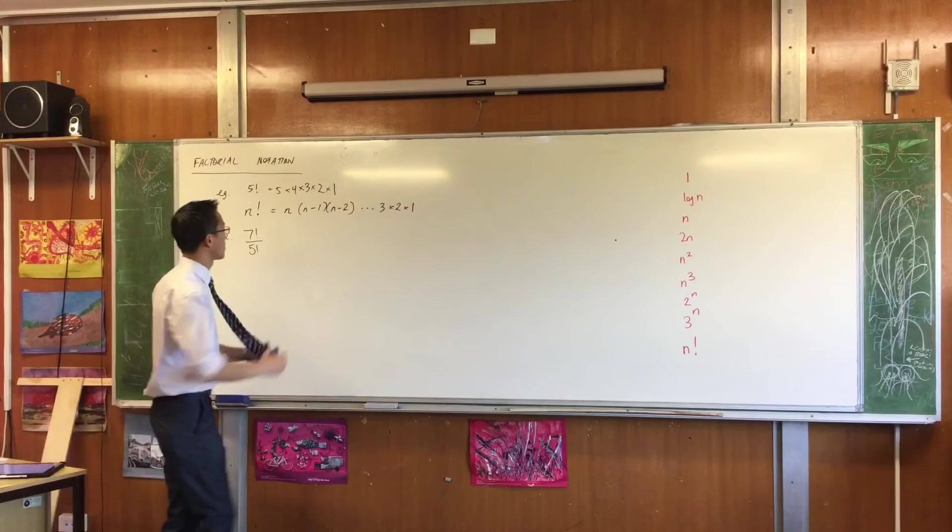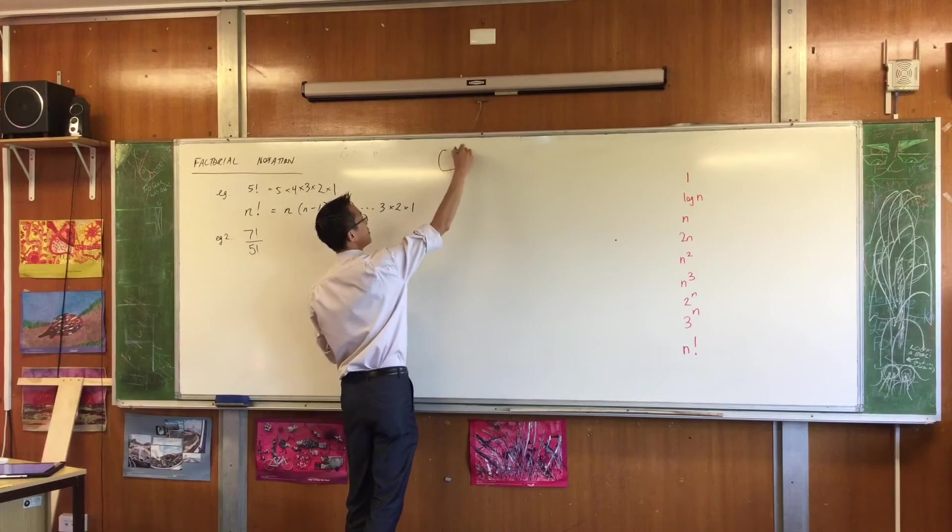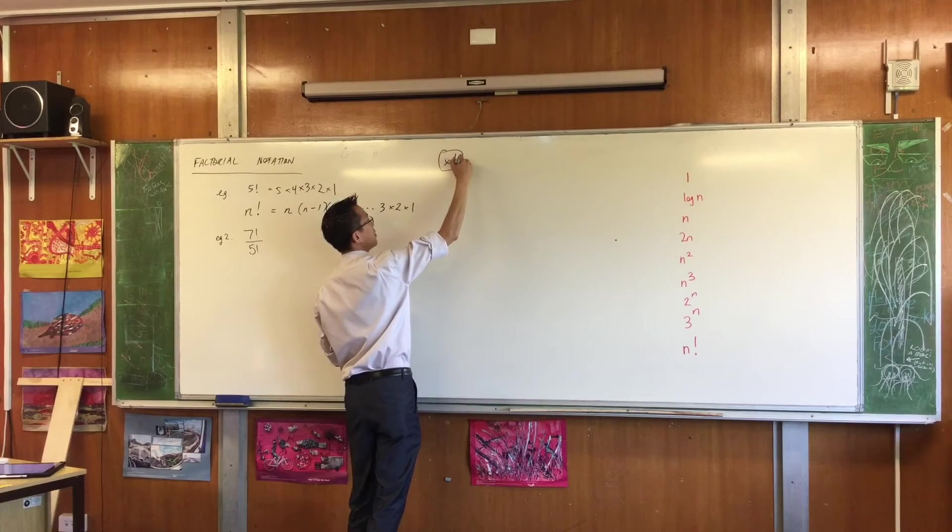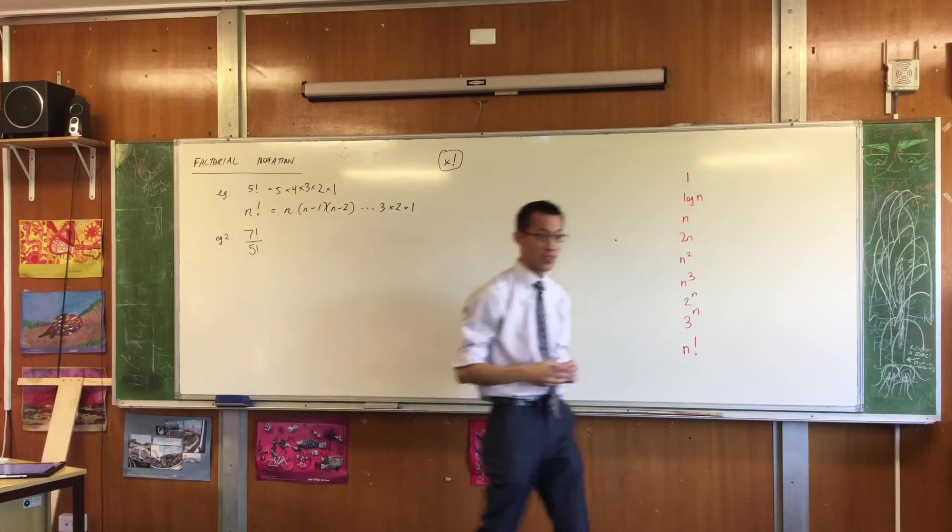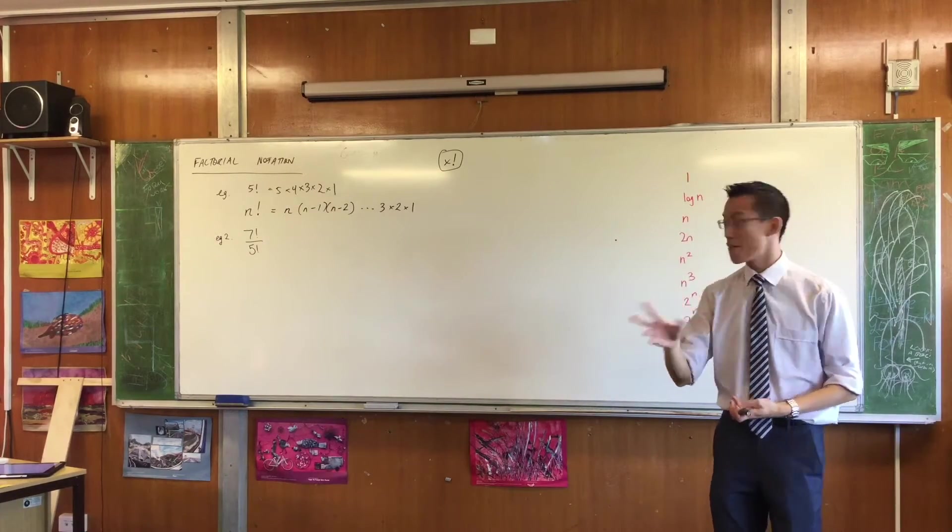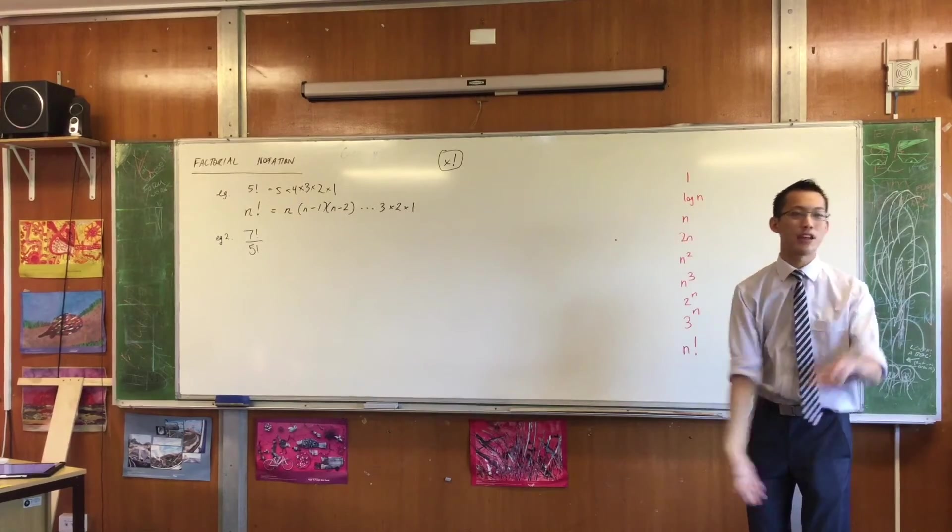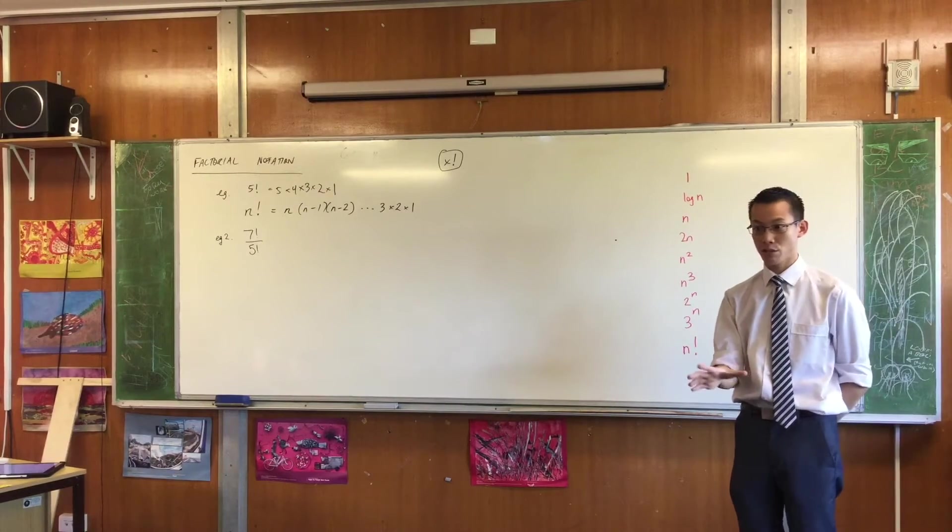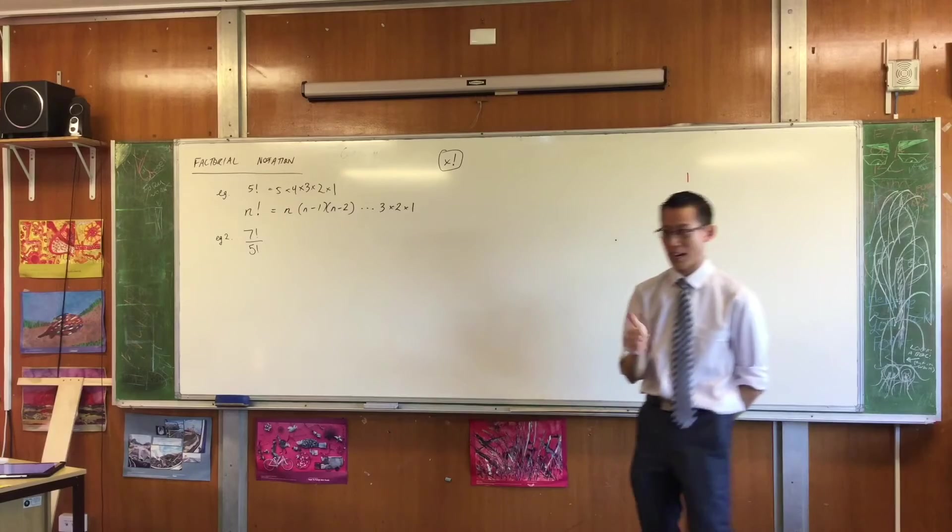You see it there, right? So just quickly check it by typing in 5 and then the factorial button, and it should hand you back 120. Yes? Thumbs up. It's calculating. Yes? Okay.